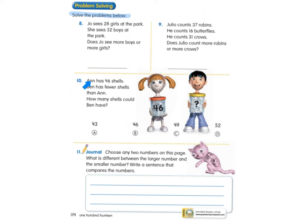Number ten, Ann has 46 shells. Ben has fewer shells than Ann. How many shells could Ben have? Well, if Anna has 46, he has to have fewer. Would it be 43, 46, 49, or 52? Number 11. You can cross off today. Okay, we talked about it during Nearpod.